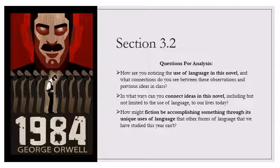He was strapped into a chair surrounded by dials under dazzling lights. A man in a white coat was reading the dials. There was a tramp of heavy boots outside. The door clanged open. The waxen-faced officer marched in, followed by two guards. Room 101, said the officer. The man in the white coat did not turn around. He did not look at Winston either. He was looking only at the dials. He was rolling down a mighty corridor a kilometer wide, full of glorious golden light, roaring with laughter and shouting out confessions at the top of his voice. He was confessing everything, even the things he had succeeded in holding back under the torture. He was relating the entire history of his life to an audience who knew it already.